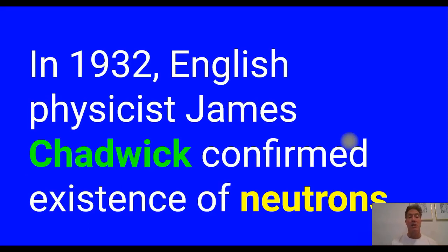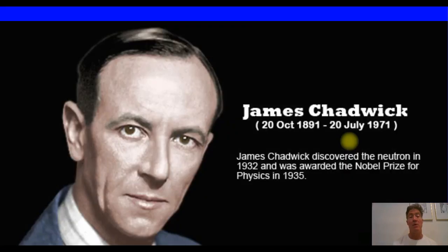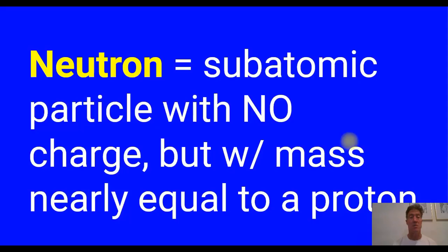A few years later, in 1932, James Chadwick confirmed the existence of neutrons — the third subatomic particle — because it was known that the atom had more mass than could be accounted for by either the mass of the electron, which was very, very small, and the mass of the proton. There must be some other particle that helped give it mass — a neutrally charged particle called a neutron. Chadwick won the Nobel Prize for confirming the existence of neutrons. We define the neutron as the subatomic particle with no charge, but it has a mass essentially equal to that of a proton.